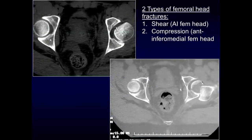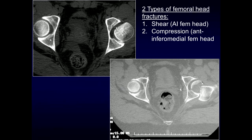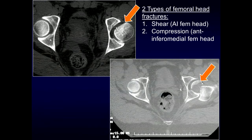There are two types of femoral head fractures. You can have a shear type fracture — most commonly it's the anterior inferior aspect of the femoral head that gets sheared off following dislocation. Or you can have a compression type injury, most frequently at the anterior inferior aspect of the femoral head, similar to a Hill-Sachs impaction fracture that you get in the shoulder. Here we see fracture of the femoral head with the fragment displaced into the acetabulum and an associated intraarticular fragment.